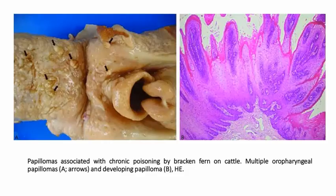In these pictures, you can see papillomas associated with chronic poisoning in cattle. There are multiple oropharyngeal papillomas in the first picture. Coming to the next condition: that is bright blindness.